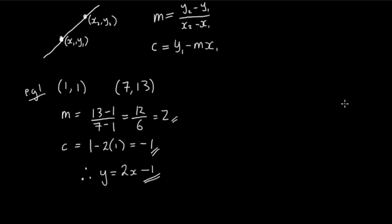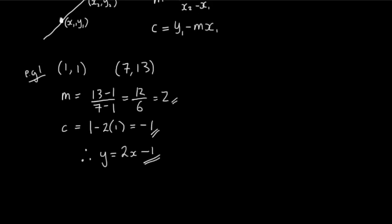I'm just going to have a look at one further example. Let's have a look at one where we've got some negative values in. So let's have minus 2, minus 3, and we've also got 4 and 6.